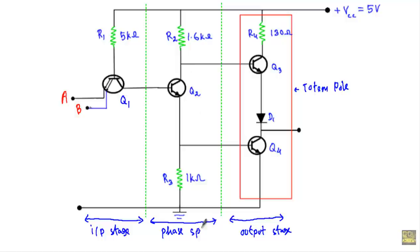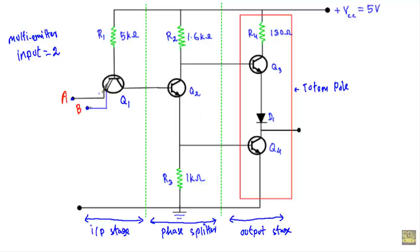Look at the input stage. At the input side we have a transistor Q1. This is an NPN transistor and this is a multi-emitter transistor. This transistor has total two input terminals. The emitter terminal count of transistor Q1 is equal to two, meaning this will be a two-input TTL NAND gate with totem pole structure. The number of inputs equals the number of emitter terminals.